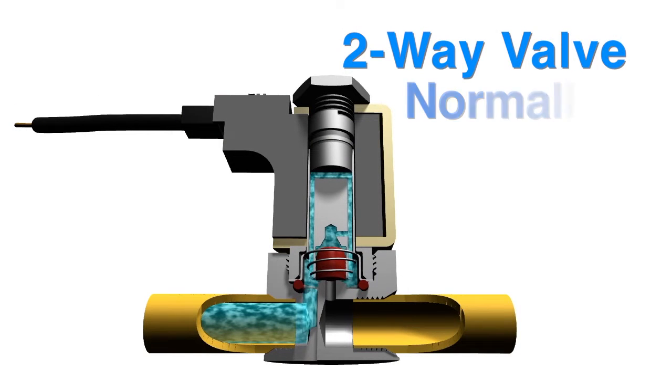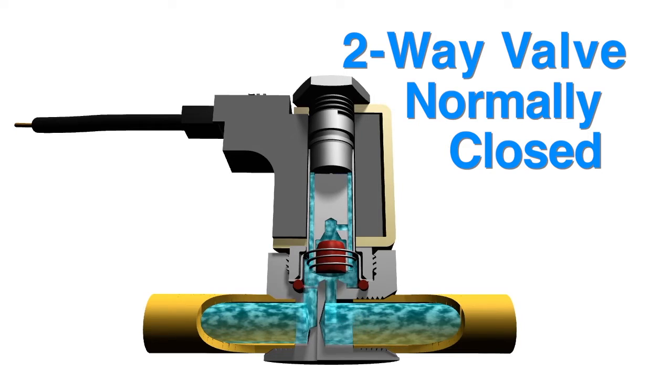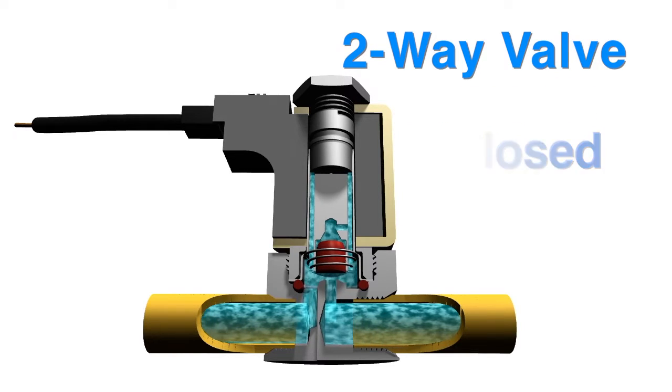In two-way normally closed electric solenoid valves, the pressure flow from one port to the other is blocked until the power is turned on and the valve becomes energized. Powering on then allows the media to flow freely through the valve.